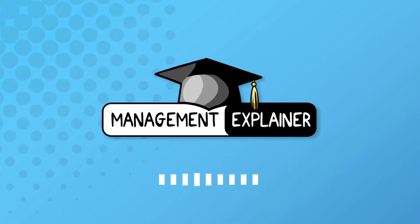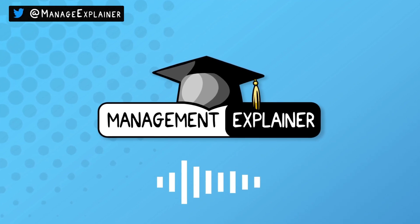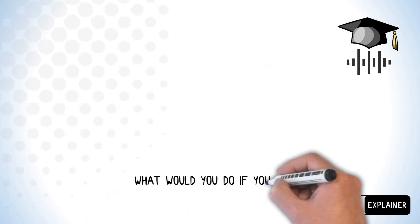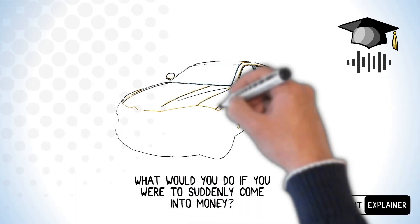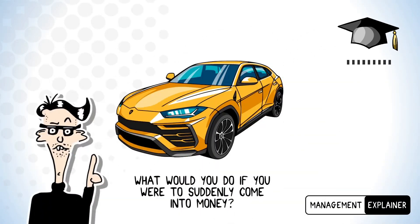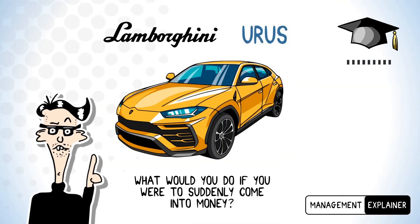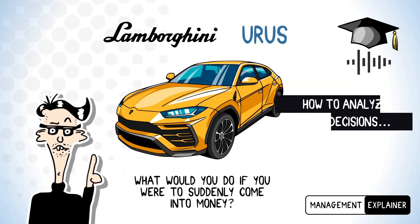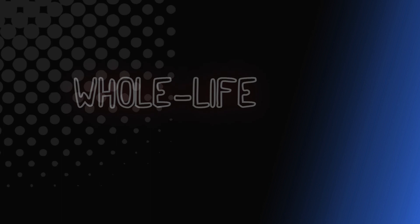Hi everyone, welcome to the Management Explainer. In this video we're dispensing some life advice. What would you do if you were to suddenly come into a load of money? You'd buy a ridiculous car, of course. One car that definitely qualifies as ridiculous is the Lamborghini Urus. In this video I'll show you how to analyze the cost of such decisions through a method called whole-life cost modeling.